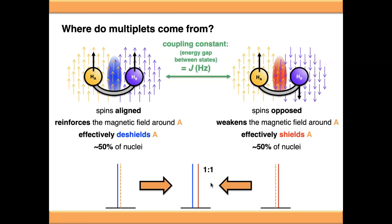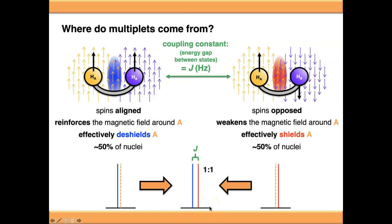An important piece of notation is the coupling constant. On a theoretical level, it's the energy gap between the aligned-spin state and the opposed-spin state. It's given the value J, sometimes called the J value, and it's measured in Hertz. We can measure this from the spectrum as the gap between the two signals — but again measured in Hertz, so we'll see how to convert from ppm later.